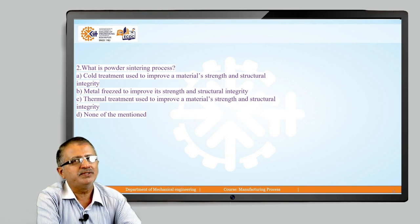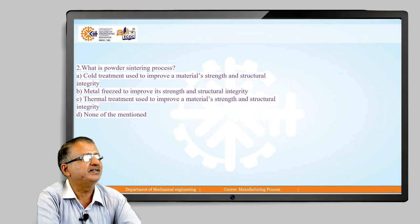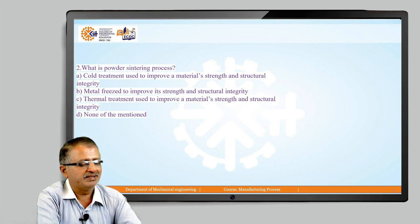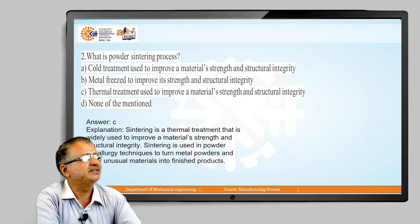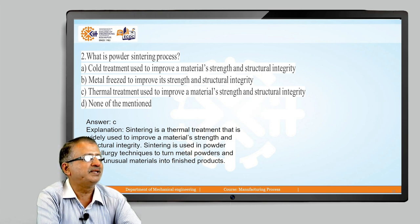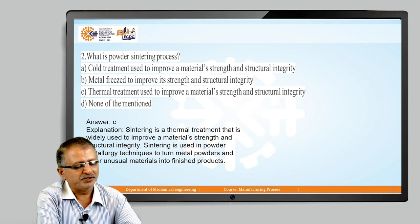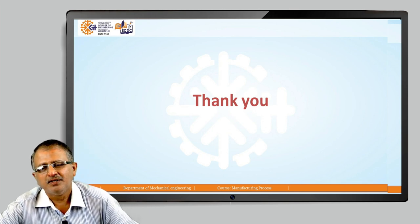The second question is: what is the powder sintering process? Options are: cold treatment used to improve material strength and structural integrity; metal freeze to improve strength and structural integrity; thermal treatment used to improve material strength and structural integrity; or none of the mentioned. The answer is C — sintering is a thermal treatment involving heating to a range of 80 to 90 percent of the melting point to improve material strength and structural integrity. Sintering is used in powder metallurgy to turn metal powder into a finished product. Thank you for joining.